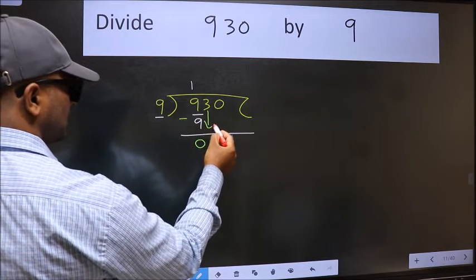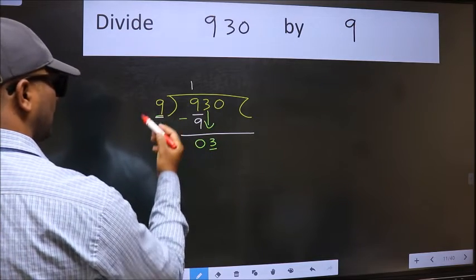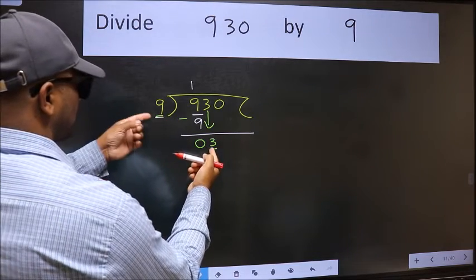After this, bring down the beside number. So 3 down. Now here we have 3 and here 9. 3 is smaller than 9.